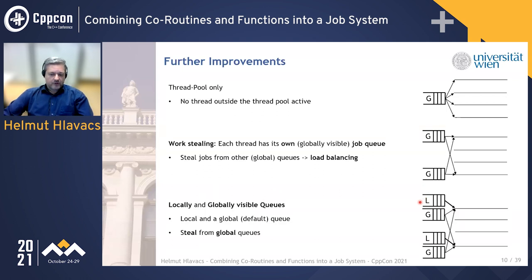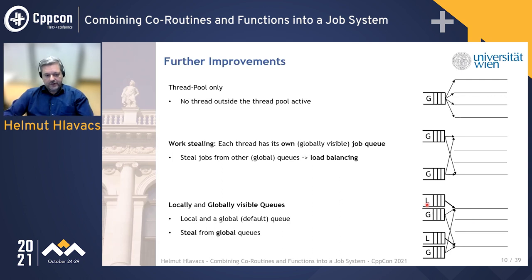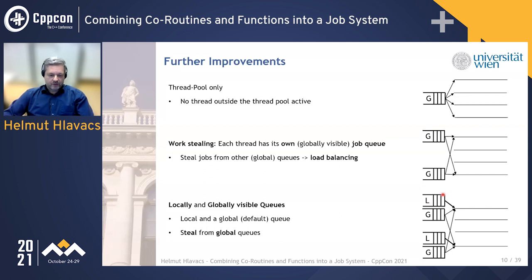We can go even further and say that some queues are global — so work can be stolen from them — but every thread also gets a local queue. When work arrives in a local queue, you cannot steal it; only the thread that owns the local queue can take work out. This makes sense when interacting with systems like GLFW, where you can interact only from the main thread. So you force all work that interacts with GLFW onto one specific thread. We can have both locally and globally visible queues, with work stealing only from global queues.